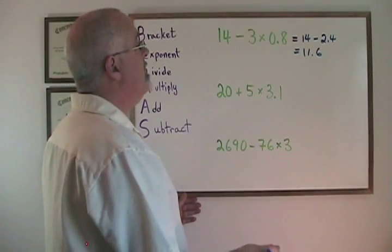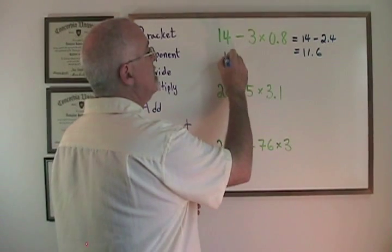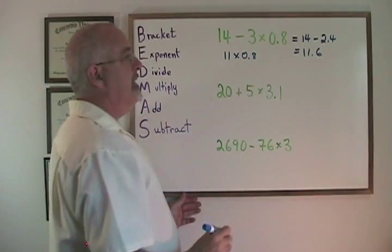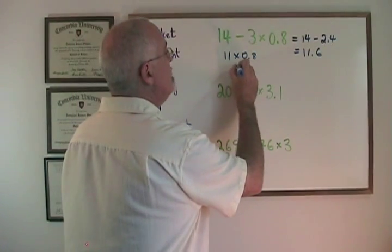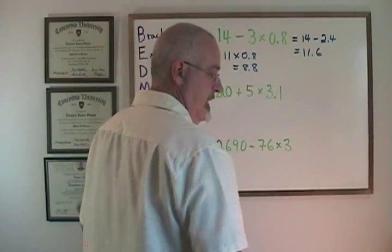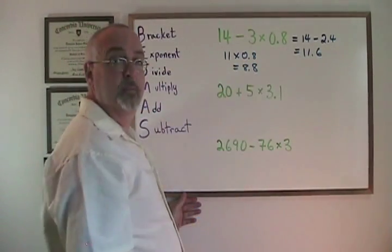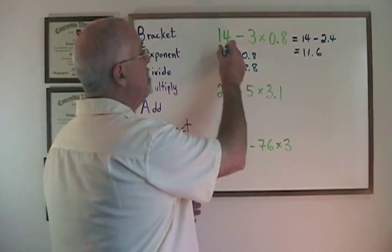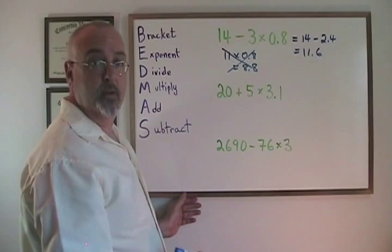If we were to do it wrong, we would say 14 minus 3 is 11, and 11 times 0.8 is 8.8. Clearly, this is not the same as 11.6. We got this answer by not following the rule of BEDMAS, by breaking the rule. It's the wrong answer. Do not do it this way.